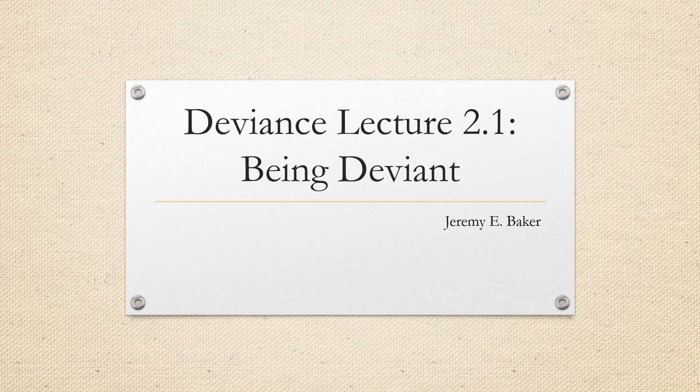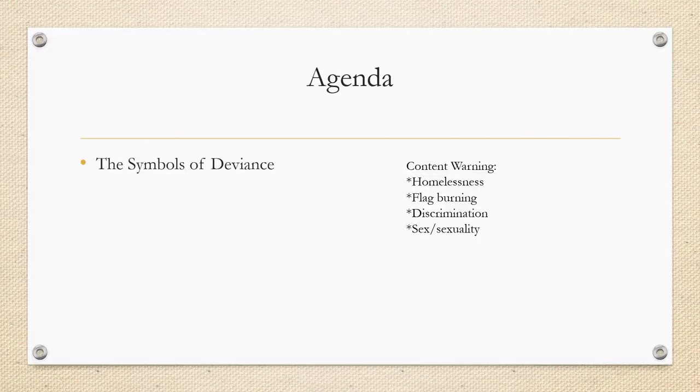This is Deviance Lecture 2.1, Being Deviant. In this lecture, we're going to talk about specifically the symbols of deviance, content warnings surrounding homelessness, flag burning, discrimination, and both sex and sexuality.